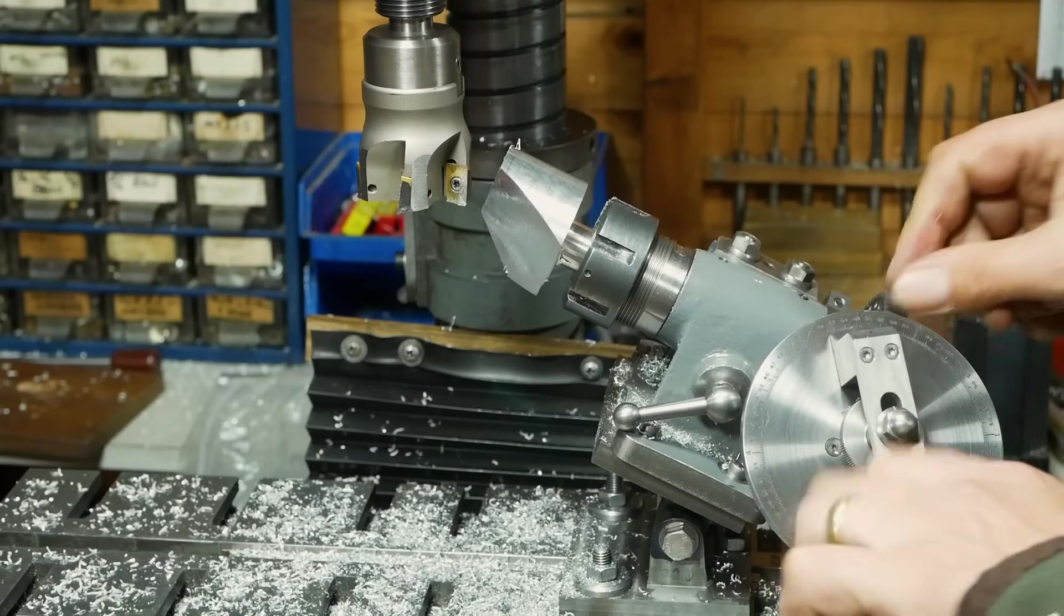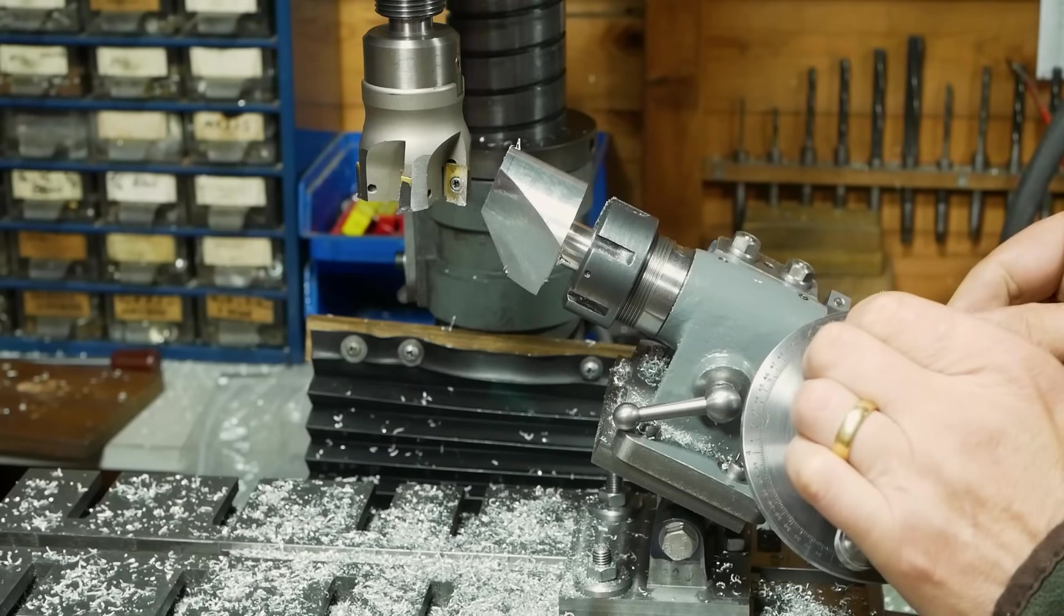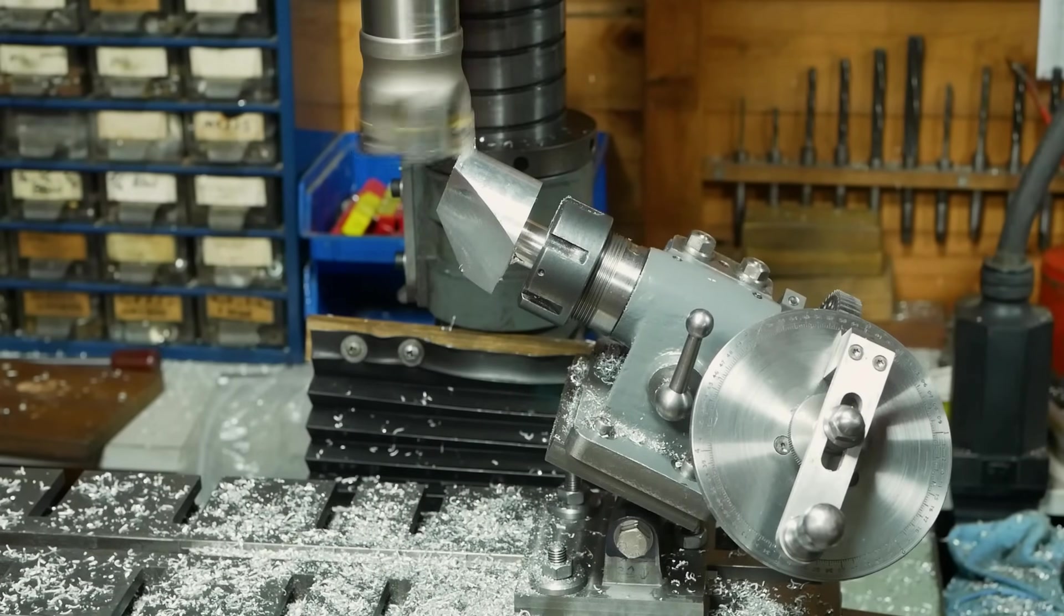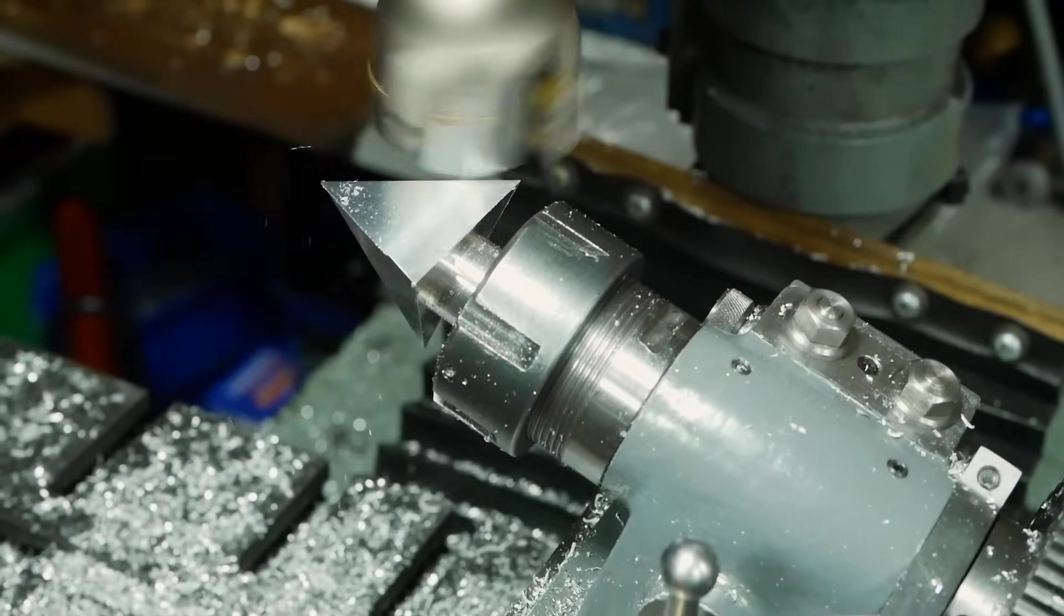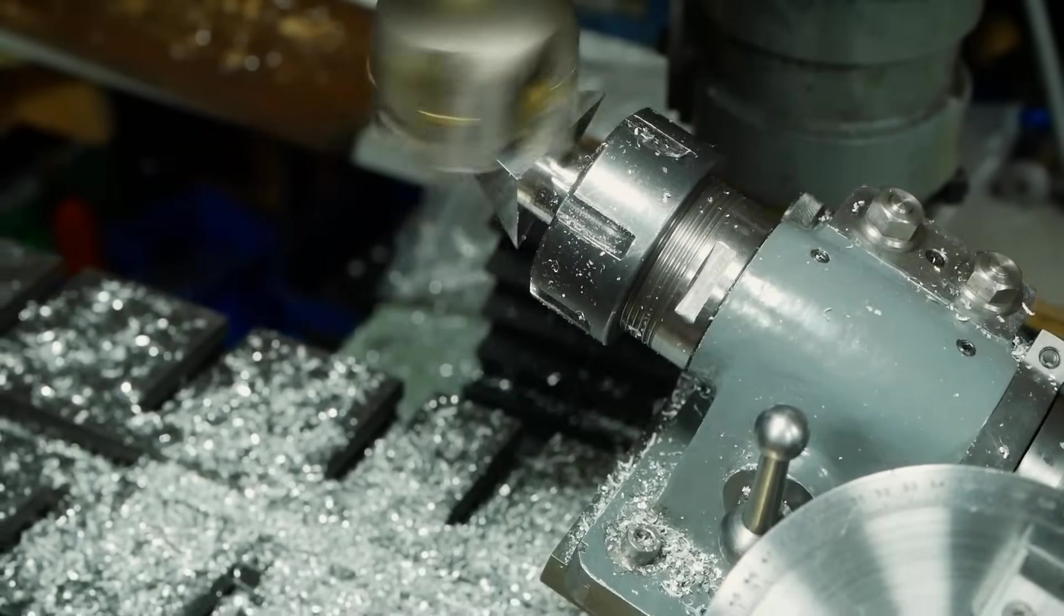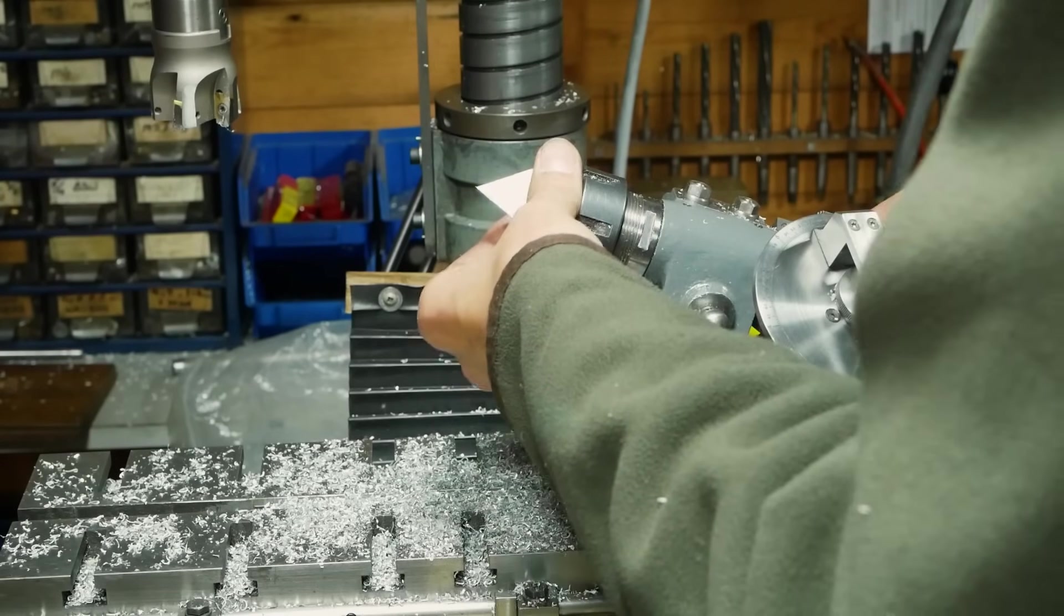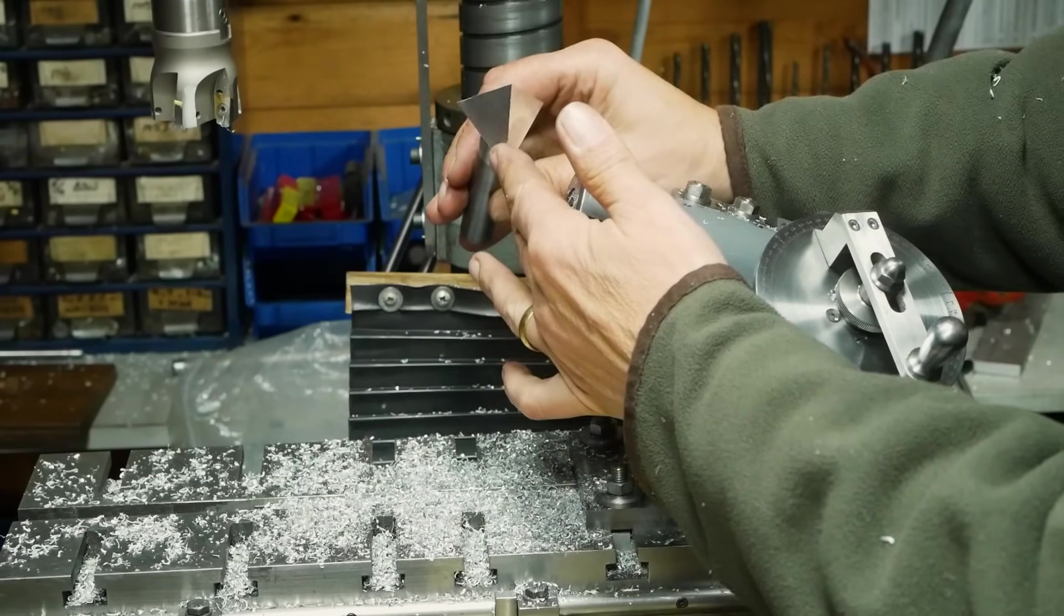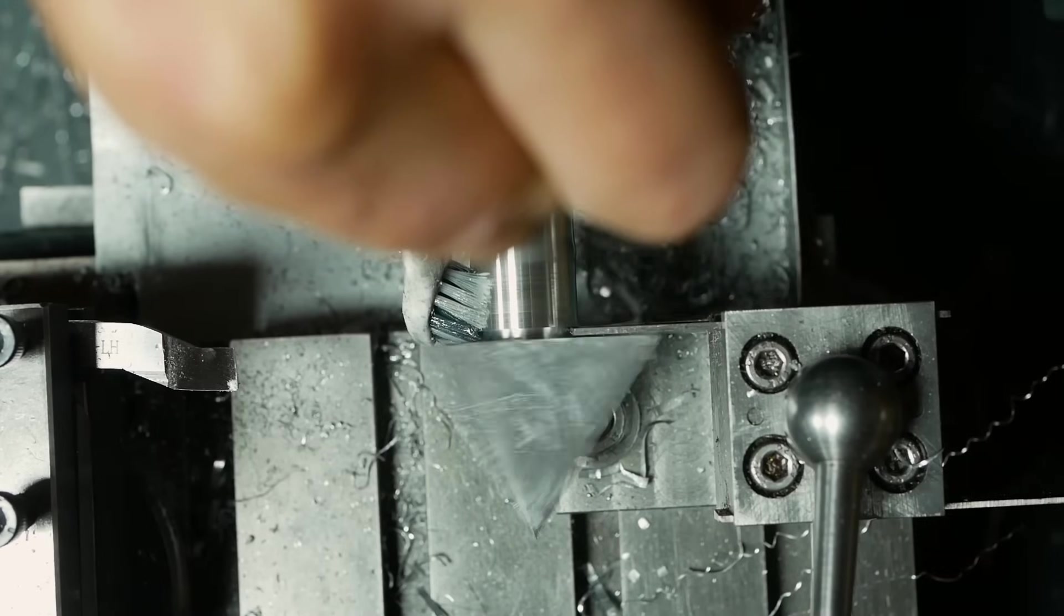Here, Alistair machines the tetrahedron by indexing the workpiece into three using the dividing head. To form the angled faces, he mounts the dividing head onto an adjustable angle plate, which has been set to the correct angle. Alternatively, the head could be tilted, but this method would be more restrictive in this instance, because the x-axis couldn't be used without changing the depth of cut. The tetrahedron is parted off to finish.